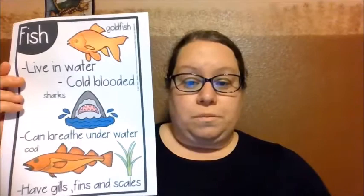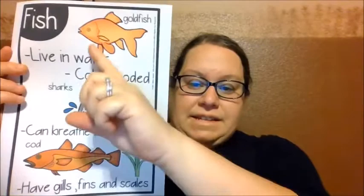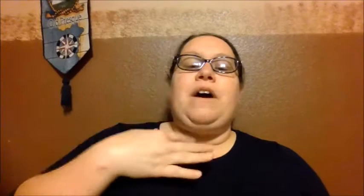Then we have fish. Fish live in the water — obviously they have gills to breathe underwater. They are cold-blooded. Examples include a goldfish, a shark, and a codfish. They have scales and fins instead of arms and legs. Just like we walk with our legs, they swim with their fins. Instead of breathing with lungs, they breathe through gills — little openings that let them breathe underwater. We can't breathe underwater, so we're a little different from them.